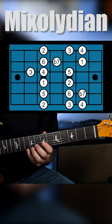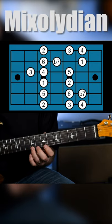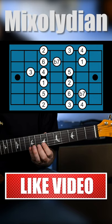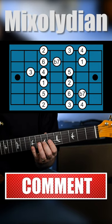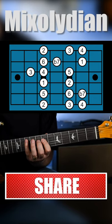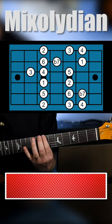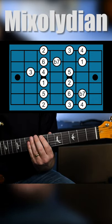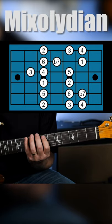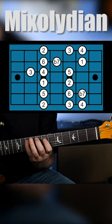Coming back we're gonna go: 4 3 2 1 flat 7 6 5 4 3 2 1 flat 7 6 5 4 3 2 1 flat 7 6 5 4 3 2, going back up to the root: 2 3 4 5 6 flat 7 1.